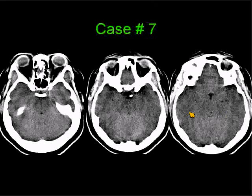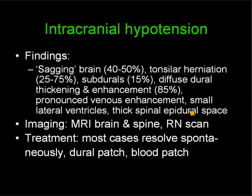The diagnosis of intracranial hypotension on CT may be a little tricky. About half of patients will demonstrate a sagging brain; tonsillar herniation in 25 to 75 percent; subdural fluid collections in 15 percent; and 85 percent will have diffuse thickening and enhancement of the dura. You can also have pronounced venous enhancement, small lateral ventricles, and a thick spinal epidural space. We start imaging with a brain MRI, then image the spine — an MR myelogram to look for a Tarlov cyst, and if nothing is found, a radionuclide scan imaging the patient on consecutive days.